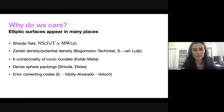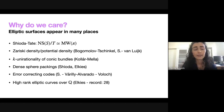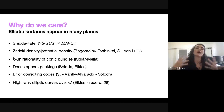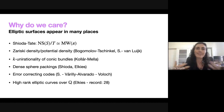Around 2008, Noam Elkies found the highest known rank of an elliptic curve over Q — at least 28 — by looking at a K3 surface with an elliptic fibration having rank 18 over Q generically, then finding fibers with rank as large as 28. This record has held for more than ten years.